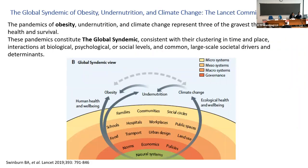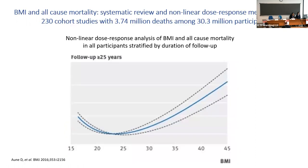As we heard in the previous talk, the global syndemic of obesity, nutrition, and climate change is a serious problem. The pandemic of obesity, nutrition, and climate change represent three of the greatest threats to human health and survival. These pandemics constitute a global syndemic, consistent with their clustering in time and space, interactions at biological, psychological, and social levels, and common large-scale societal drivers and determinants.